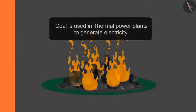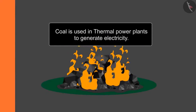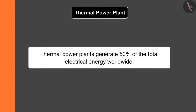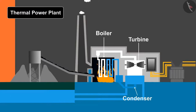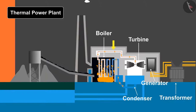Coal is used in thermal power plants to generate electricity. Thermal power plants generate 50 percent of the total electrical energy worldwide. A thermal power plant has five major components: boiler, turbine, condenser, generator, and transformer. The burning coal in the boiler heats up the water in the tubes and converts it into steam. This steam is responsible for rotating the turbine due to the increase in pressure.